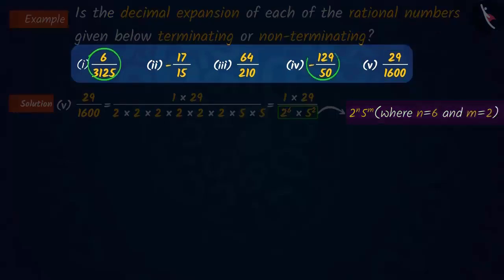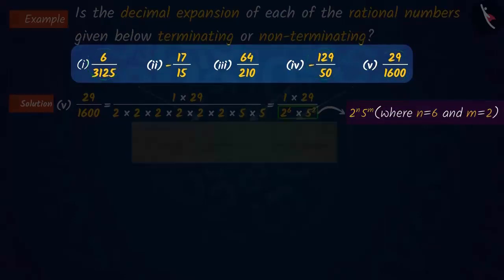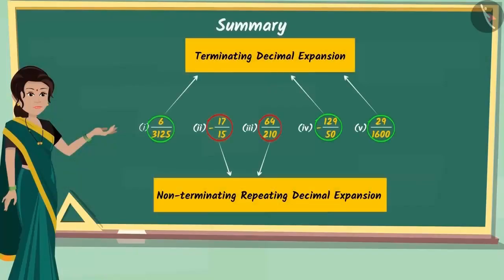So, the decimal expansions of the first, fourth and fifth rational numbers will be terminating. And the decimal expansions of the second and third rational numbers will be infinitely recurring, i.e., non-terminating.